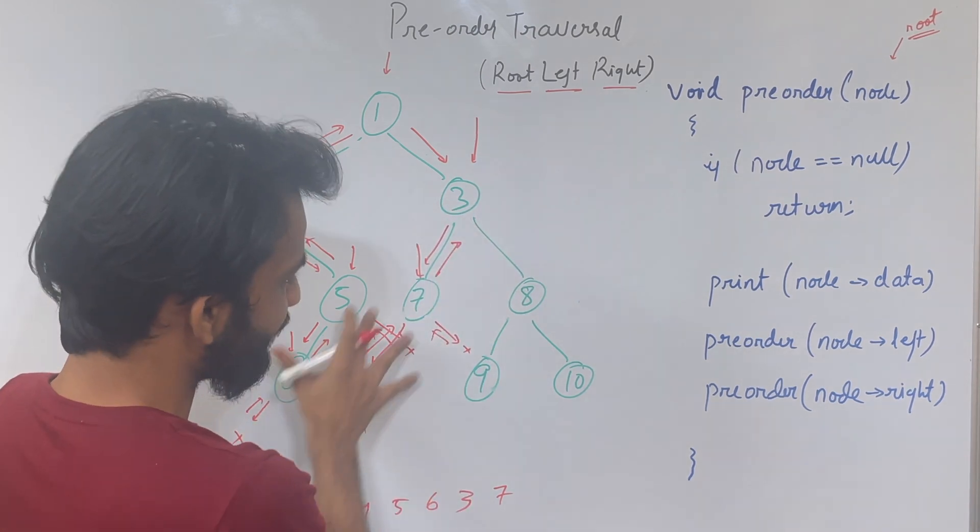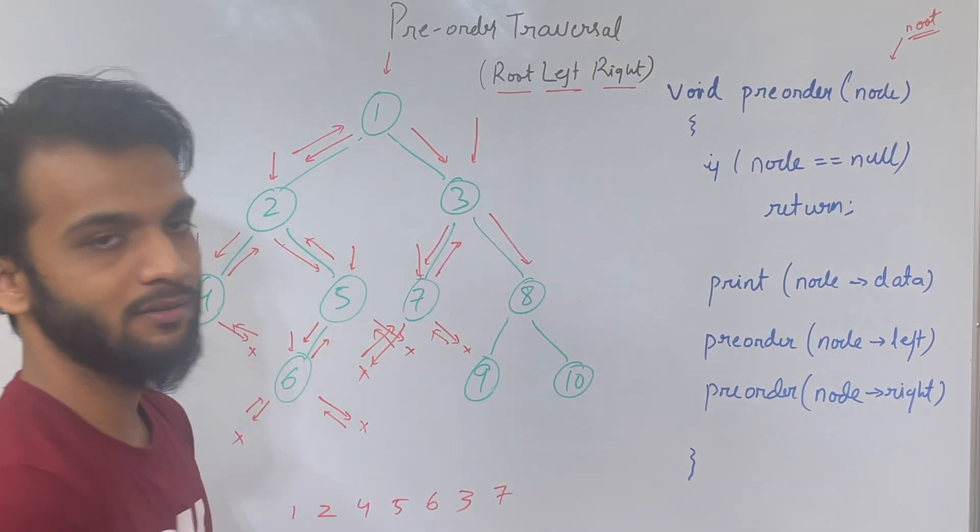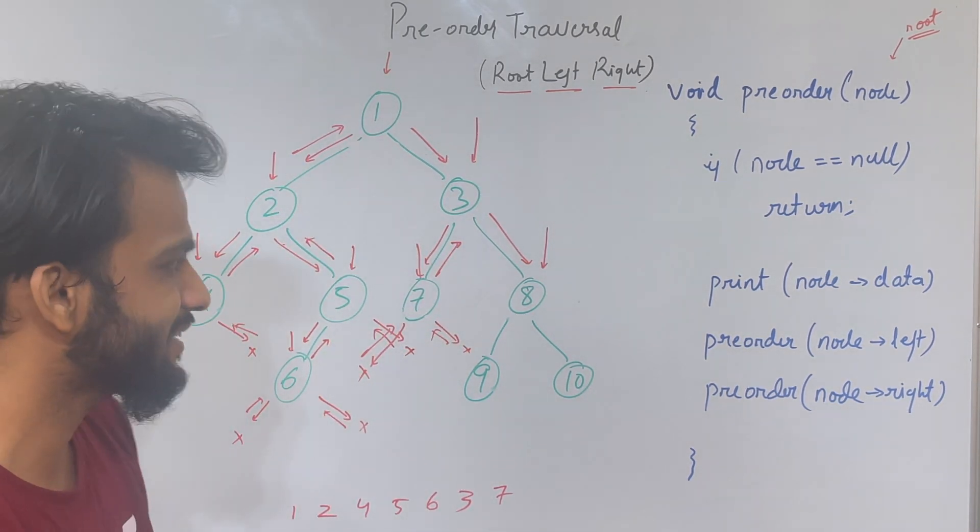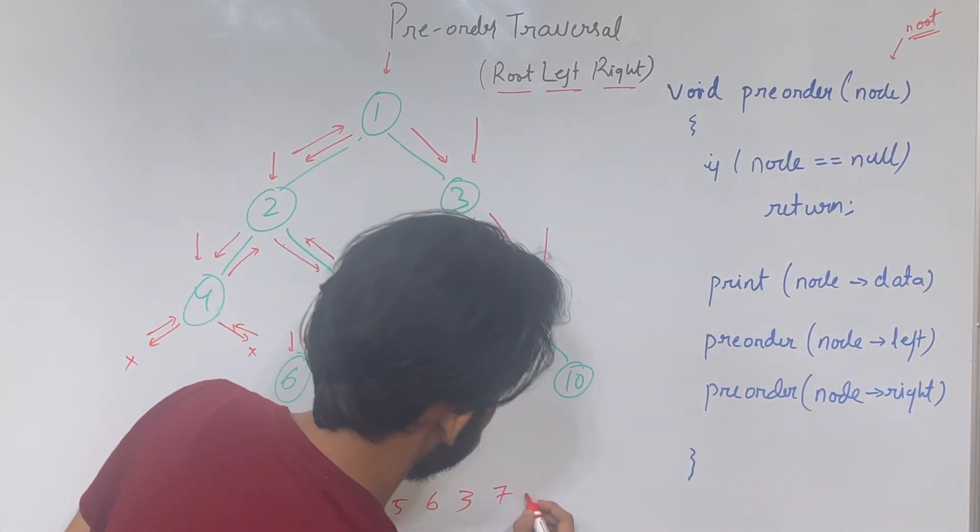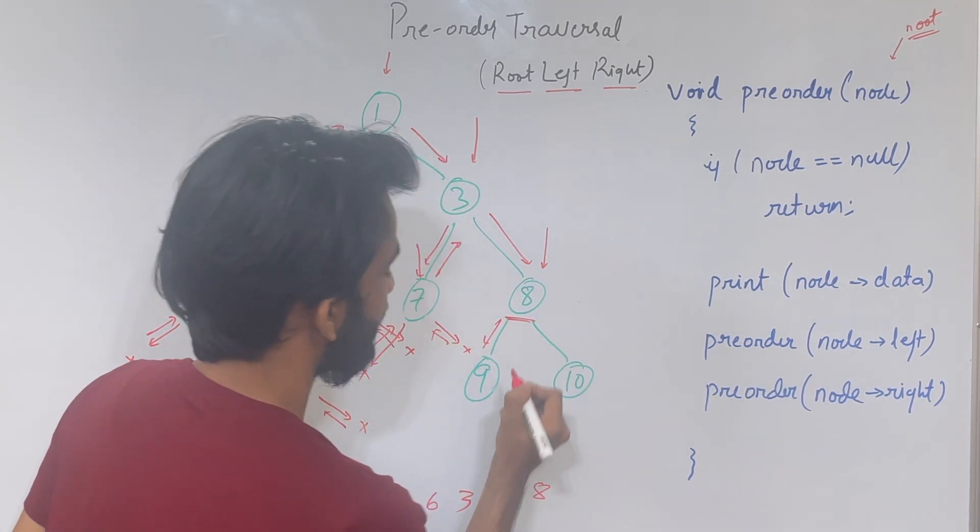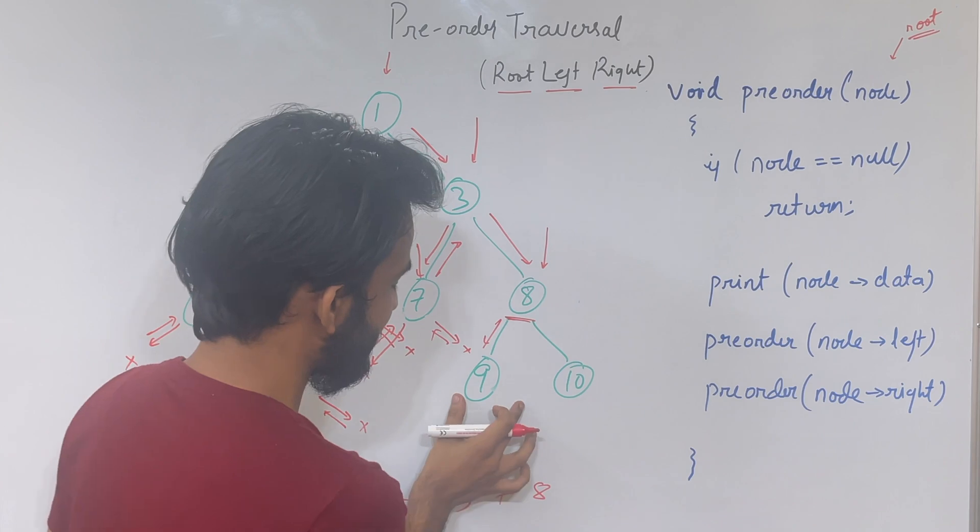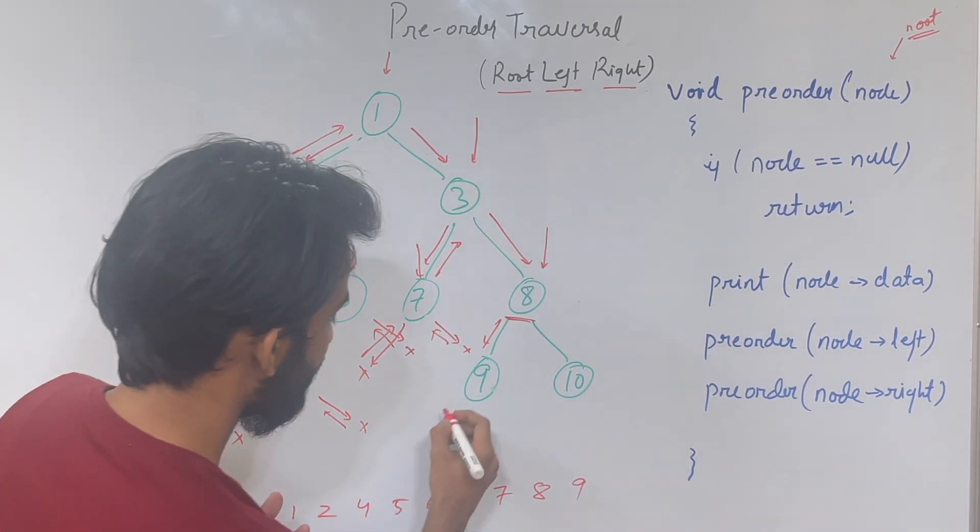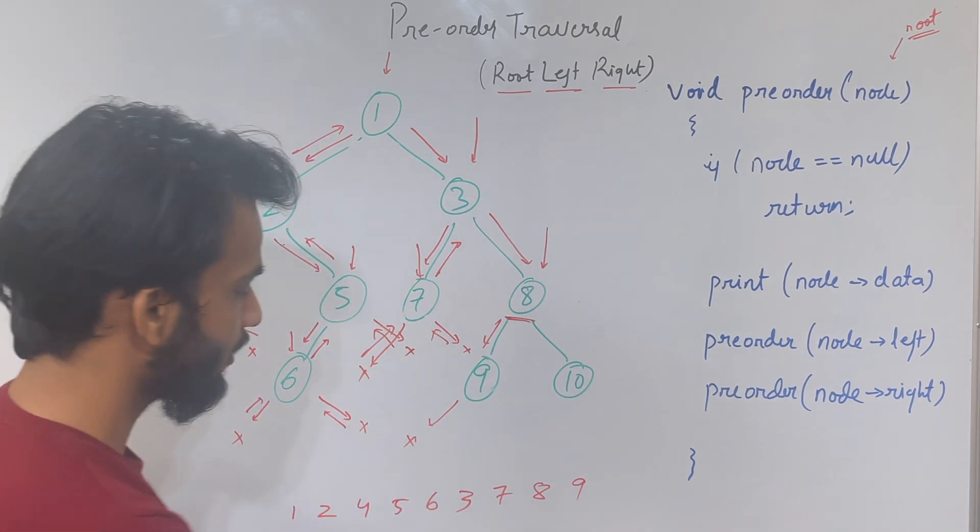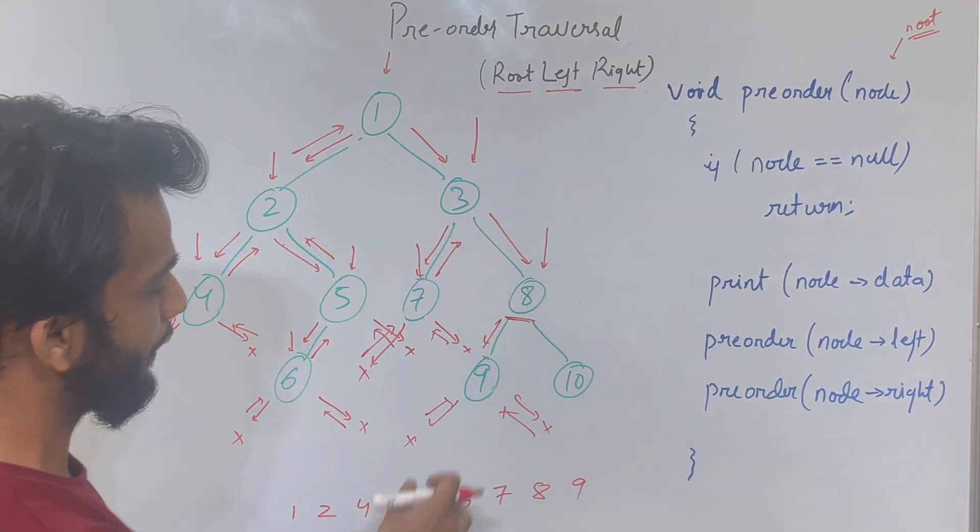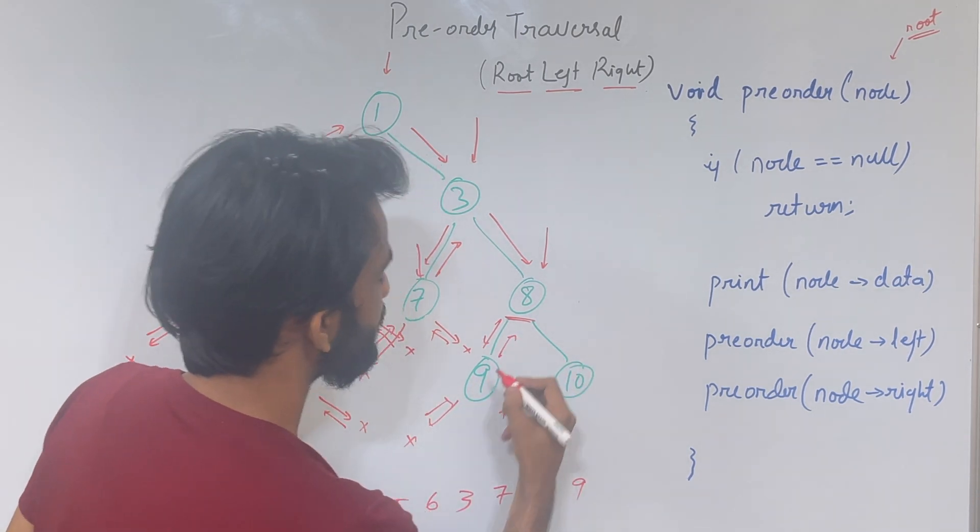Node 3 is printed, left is completed. Comes to the right, and when it comes to the right, it sees node 8. The moment it sees 8, it prints it. Once printing is done, goes to the left. Once it goes to the left, this is node 9, so we print it. Next, goes to the left—nothing. Comes back. Goes to the right—nothing. Comes back. For node 9, print, left, right is over.